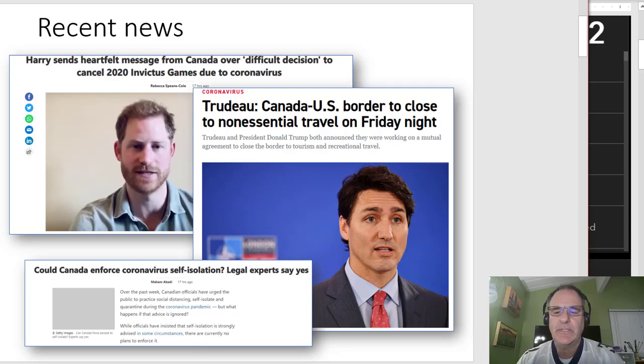A couple of things in the news recently. Justin Trudeau said the Canada-U.S. border will close to non-essential travel on Friday night. So that would have just closed recently. Harry sent a heartfelt message from Canada over a difficult decision to cancel the Invictus Games. Probably the right thing to do. And could Canada enforce coronavirus self-isolation? Legal experts say yes. So right now most of what we're doing in the U.S. and Canada is voluntary but it could become more strictly enforced.